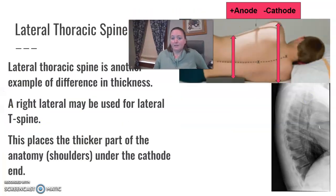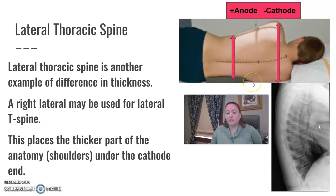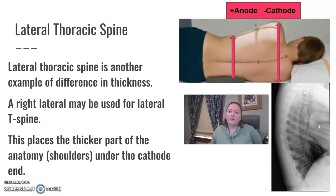For the lateral T-spine, when the patient is on their side, between the shoulders is going to be a greater thickness than down at the lower end. What's recommended is to do a right lateral — put the patient's head under the cathode side of your beam and do a right lateral so you can still see their back. That puts the thicker portion under the cathode side, so you'd be able to penetrate this thicker area better. The shoulders of a lateral T-spine would go under the cathode side, and a right lateral is suggested. This works great if they have really large shoulders.